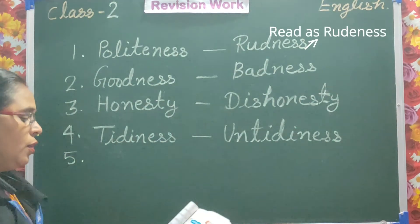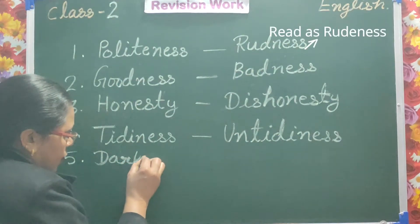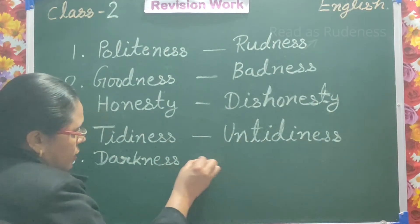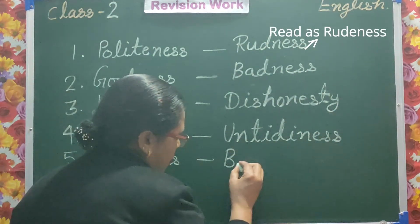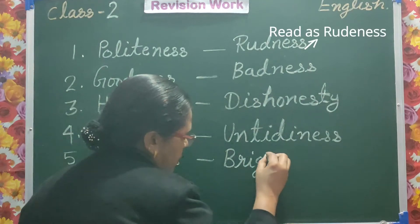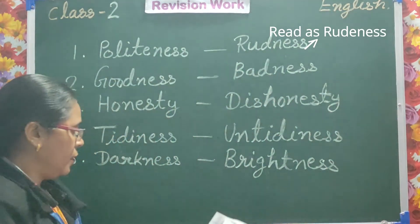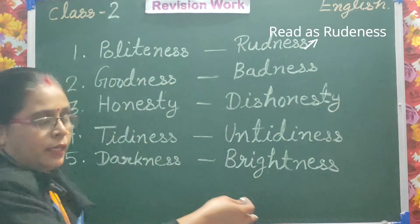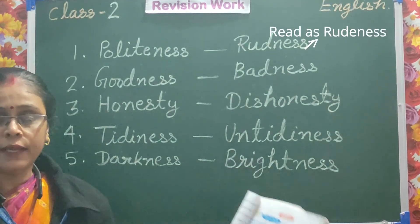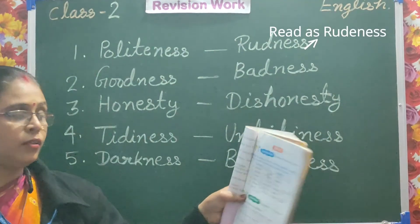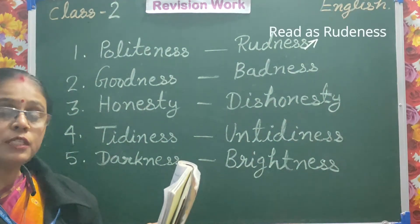Your next word is 'darkness' — D-A-R-K-N-E-S-S. And its opposite is 'brightness' — B-R-I-G-H-T-N-E-S-S. Darkness means without light — everywhere dark. And brightness means with light.